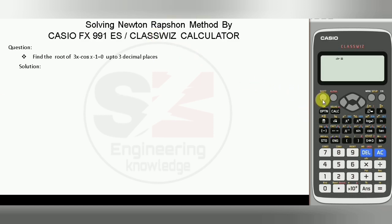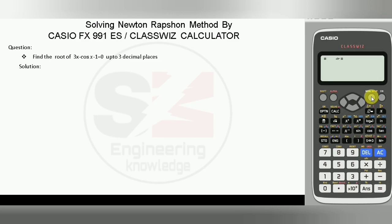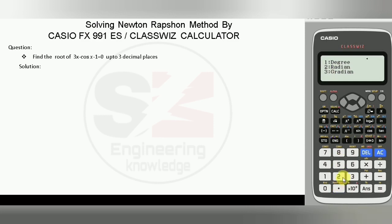At first, press the Shift button. After this, a menu will appear. Then we have to select number 2, which is angle unit. After this, we have to press 2 again for radian. In this way, we change the mode of the calculator to radian mode.